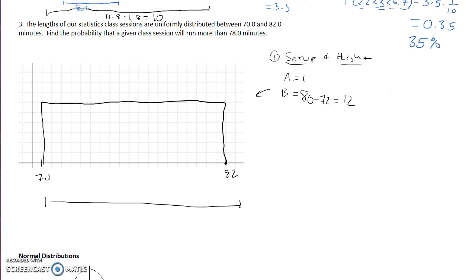So we've got our area is 1, we know our base is 12, we're going to use that area equals base times height formula. The area is 1, the base is 12, we don't know the height.